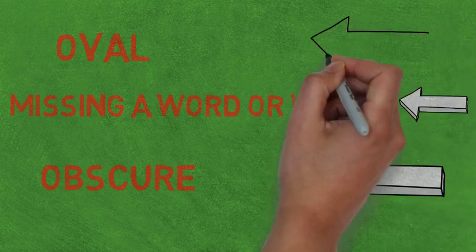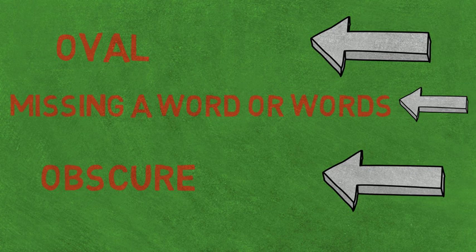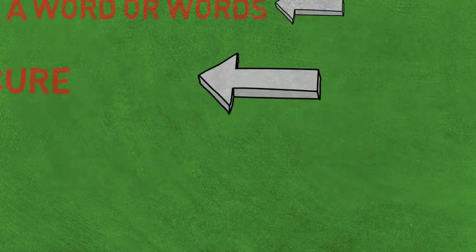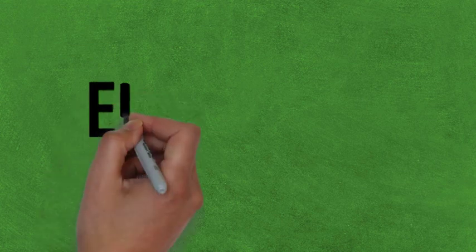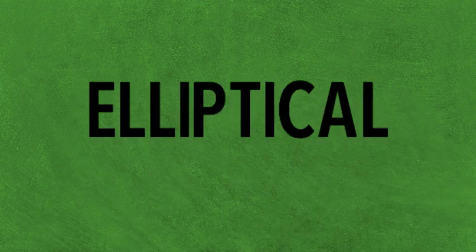Just remember a circle is perfectly round, while an ellipse is not, so there is an air of obscurity surrounding it. Oval or obscure — elliptical.